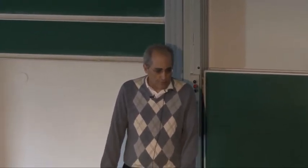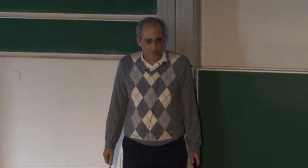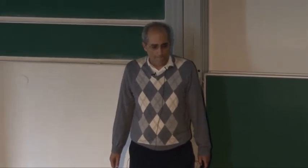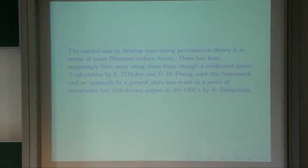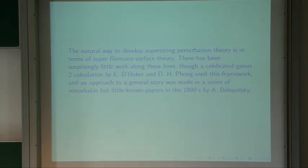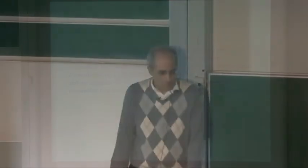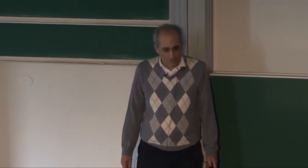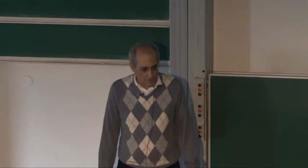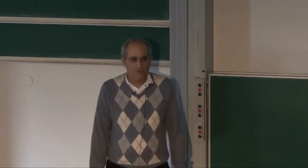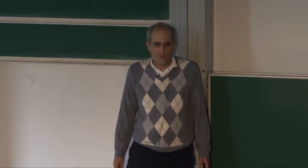The natural way to develop superstring perturbation theory is in terms of super-Riemann surface theory. There's a celebrated genus 2 calculation by D'Hoker and Phong, who worked in the framework of super-Riemann surfaces, although their calculation is based upon the fact that in the case they treated there was a natural way to reduce to ordinary Riemann surfaces. And there's a remarkable but little-known series of papers in the 90s by Andrei Belopolsky, who in the literature has come closest to explaining a good systematic approach.